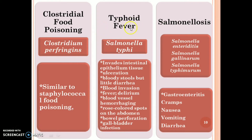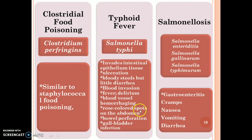Typhoid fever is caused by Salmonella typhi. The symptoms are invasion of intestinal epithelial tissue, ulceration, bloody stools with little diarrhea, blood invasion, fever, delirium, blood vessel hemorrhaging, rose-colored spots on the abdomen, bowel perforation, and gallbladder infection.